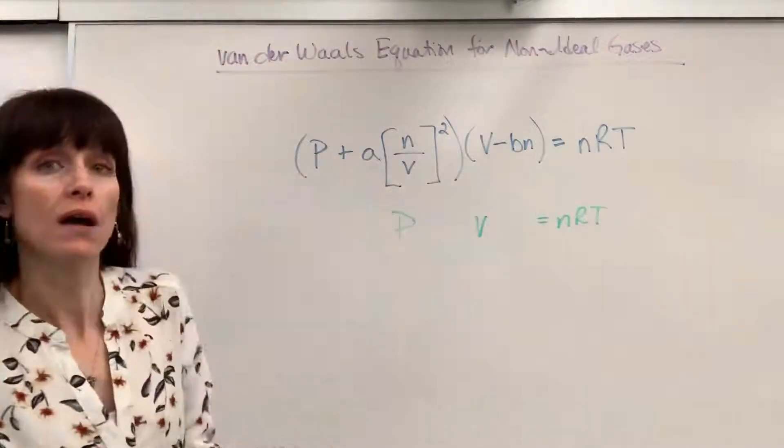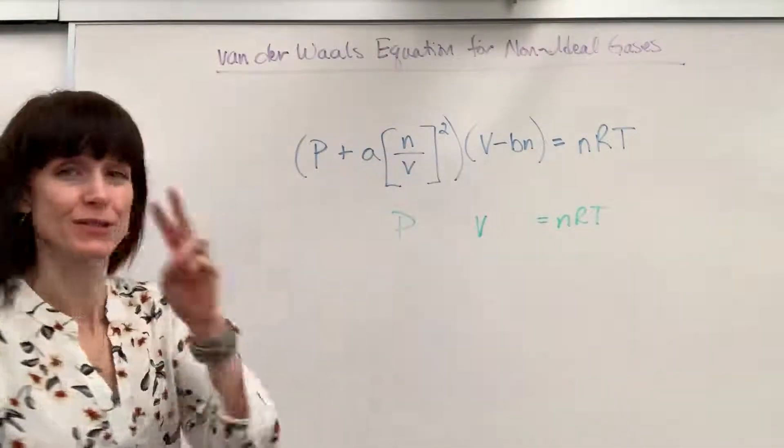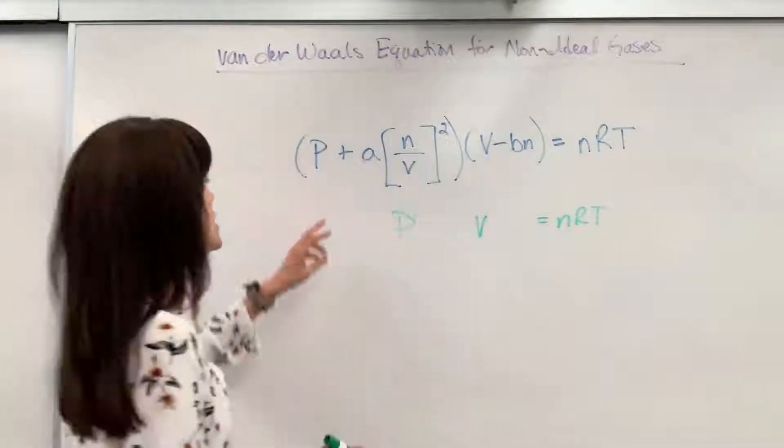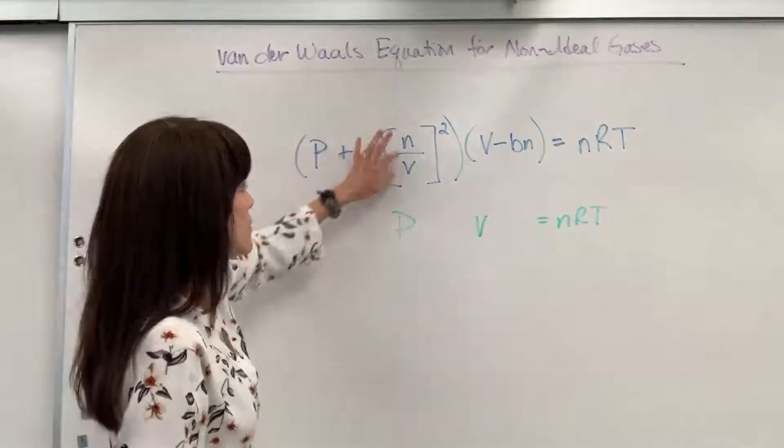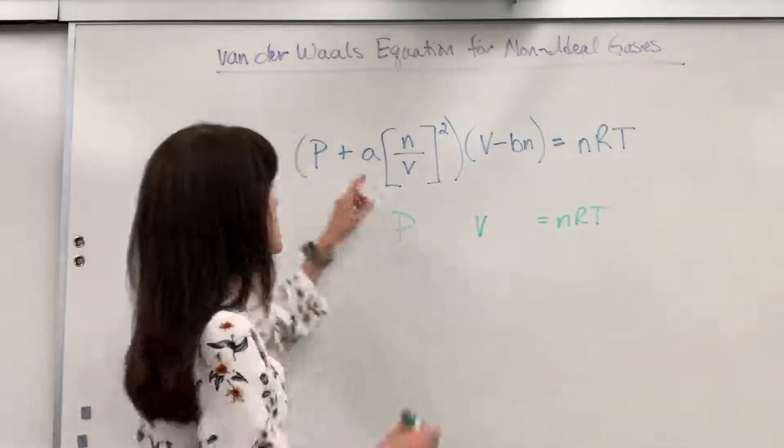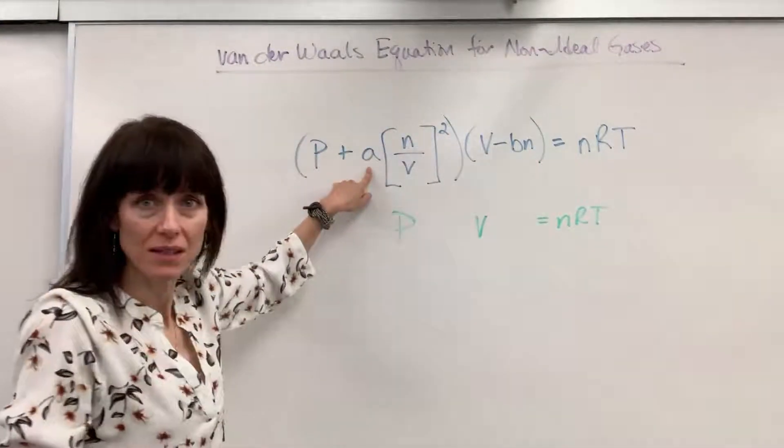Now if you look at all of the variables, there's two new variables. So you can see the pressure, moles, volume, volume, moles. It's the A and the B that are different.